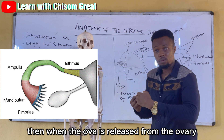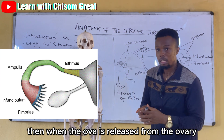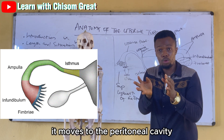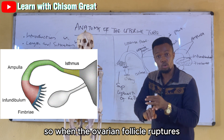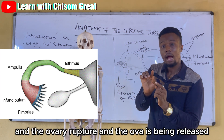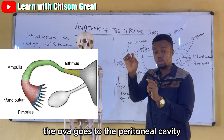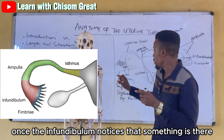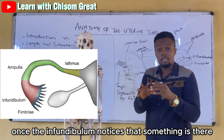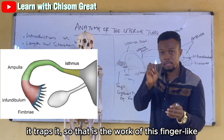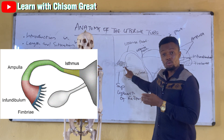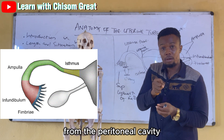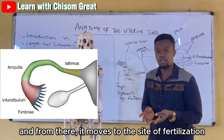When the ovum is released from the ovary, it first moves into the peritoneal cavity. When the ovarian follicle ruptures and the ovum is released, it goes to the peritoneal cavity. It doesn't remain there long — once the infundibulum detects it, the finger-like projections trap the ovum from the peritoneal cavity and move it toward the site of fertilization.